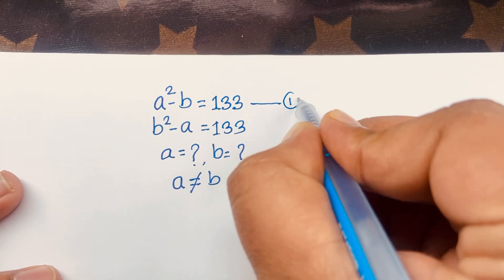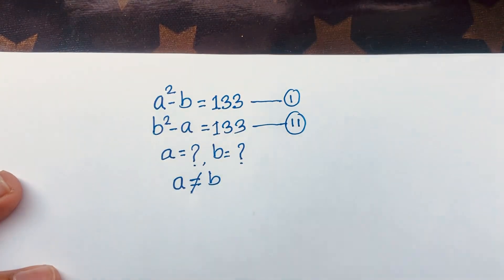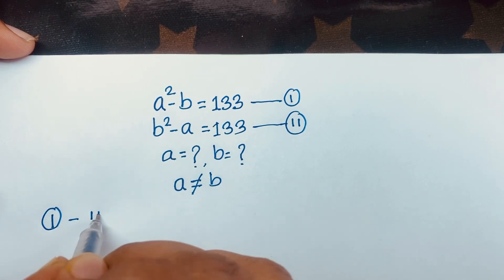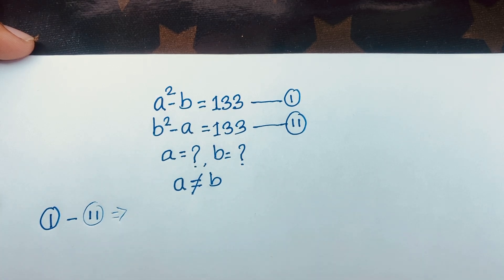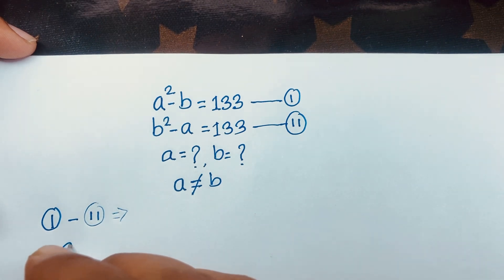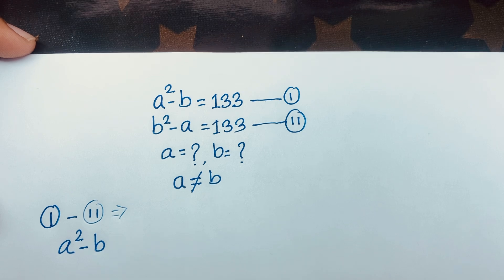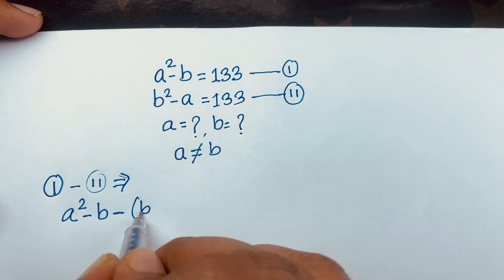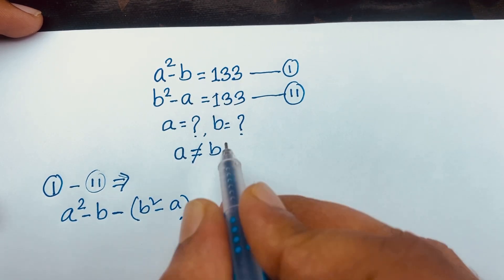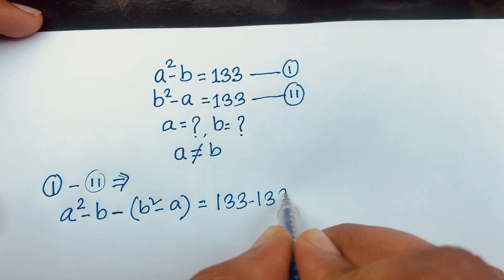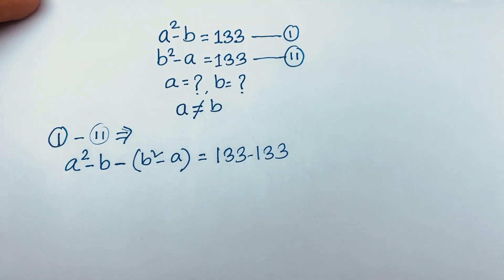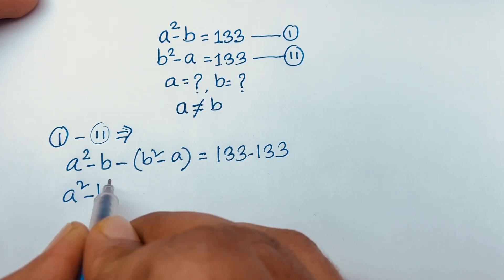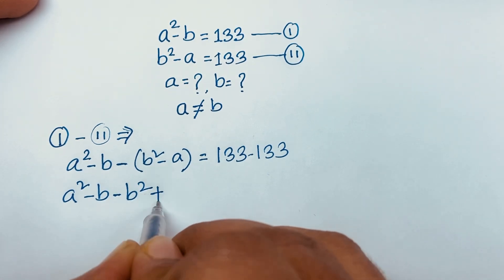This is our first equation and this is our second equation. If I subtract the first equation minus the second equation, I get: a squared minus b, and then minus (b squared minus a), which is equal to 133 minus 133.